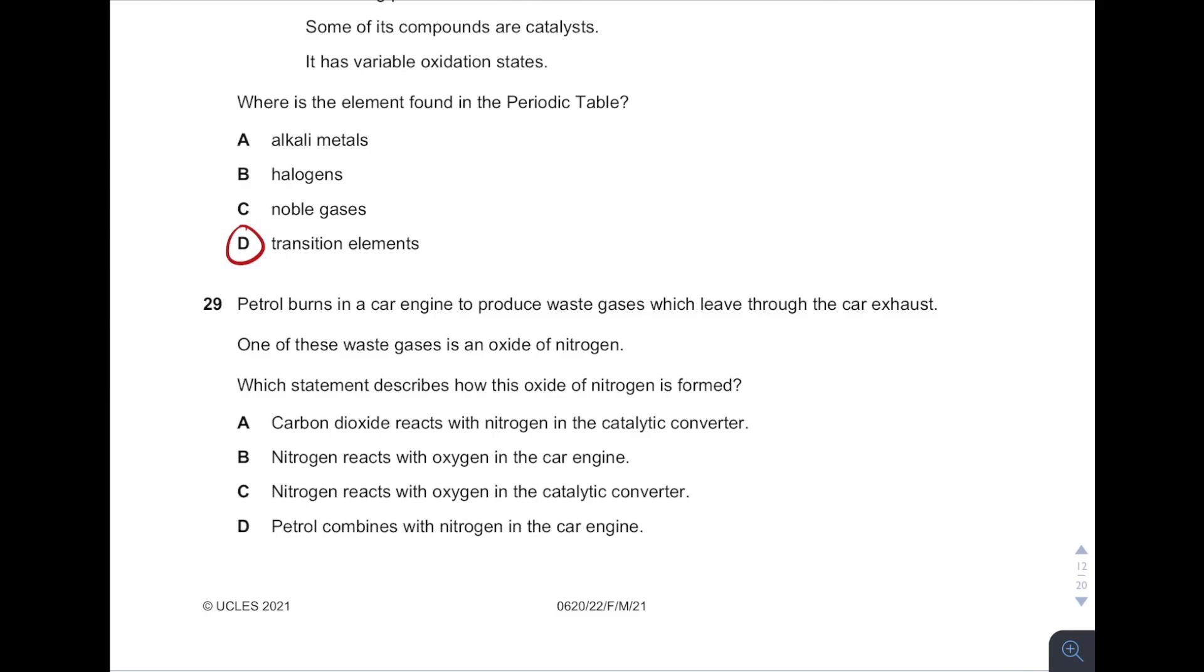Okay, next. How oxide of nitrogen can be formed? Remember, oxide of nitrogen can be formed by nitrogen reacting with oxygen under high temperature in the car engine. So therefore answer is B.